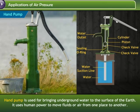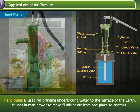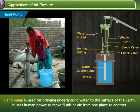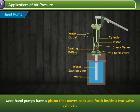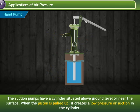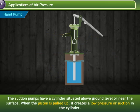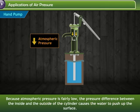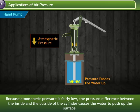A hand pump is used for bringing underground water to the surface of the earth. It uses human power to move fluids or air from one place to another. Most hand pumps have a piston that moves back and forth inside a two-valve cylinder. The suction pumps have a cylinder situated above ground level or near the surface. When the piston is pulled up, it creates a low pressure or suction in the cylinder, and the pressure difference causes the water to push up to the surface.